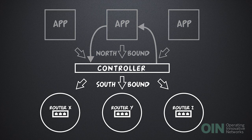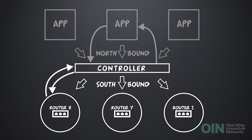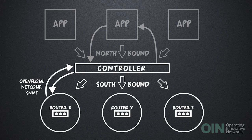Southbound APIs communicate information from the devices to the controller about things like available links, supported functionality, and interface states. For instance, if something goes wrong with the device, it will alert the controller so that adjustments can be made. In the other direction, the controller pushes rules to the devices telling them what to do, based on information from the applications and the current state of the network. These Southbound APIs can be open or proprietary. Some examples are OpenFlow, NetConf, or SNMP.